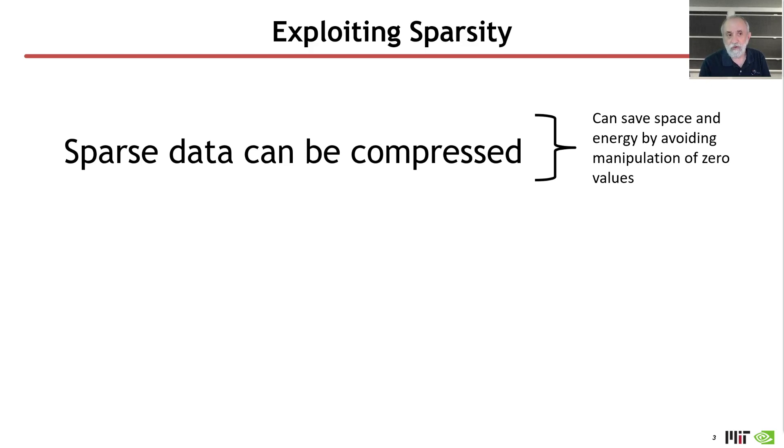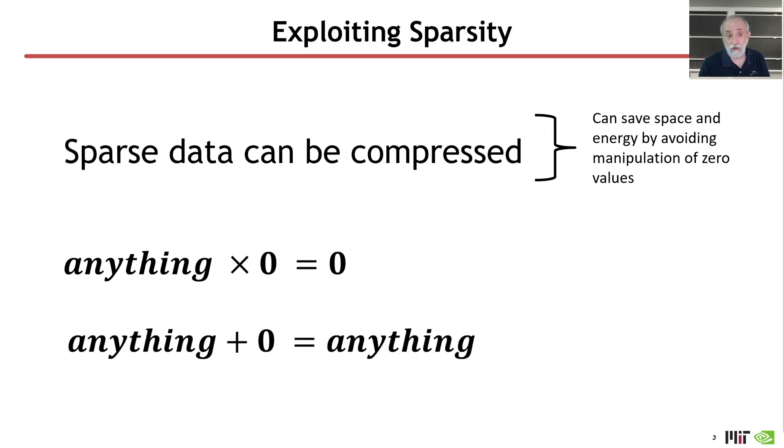Secondly, there's an opportunity to exploit sparsity mathematically using two quite simple mathematical equalities. The first is that anything times zero is equal to zero, and the second is that anything plus zero is equal to that same original anything value. In hardware, that means that we can possibly save time and energy by avoiding fetching unnecessary operands where if we see a zero as one operand we don't need to fetch the other one, and avoiding the computations because we know that if we see one zero we can immediately know the result of a multiplication is zero or the result of an addition is the original value.